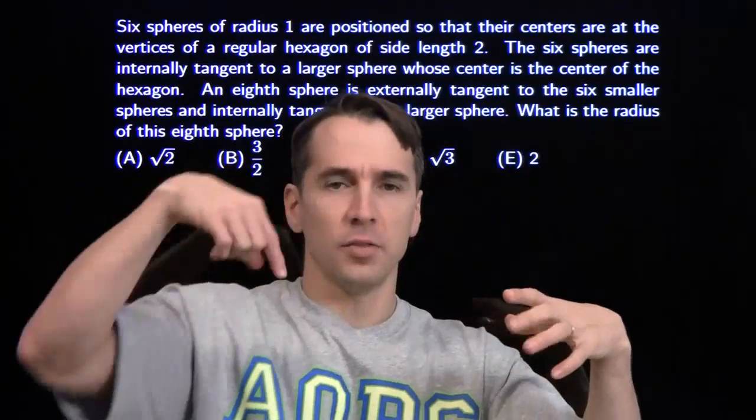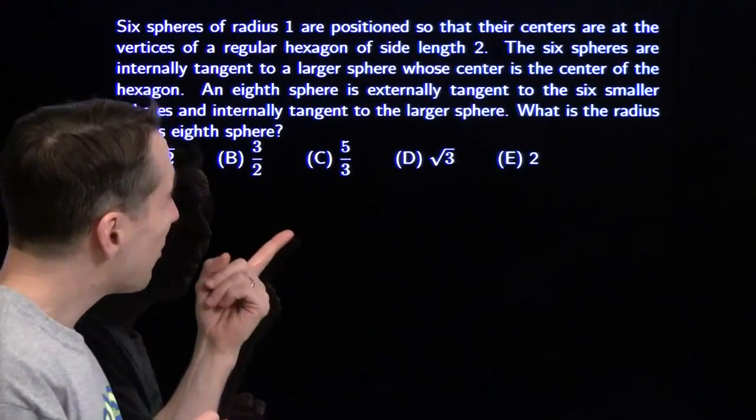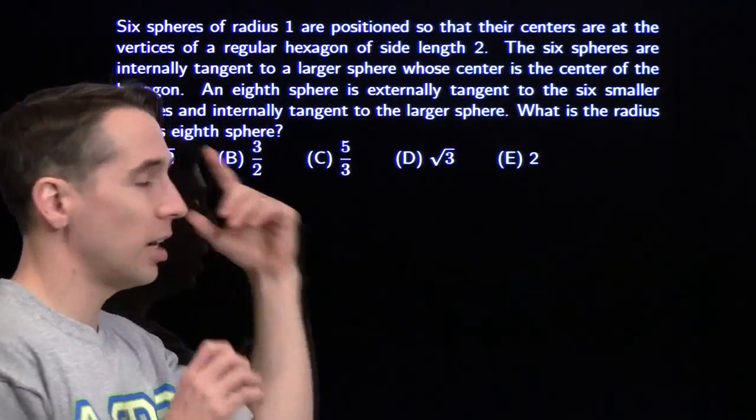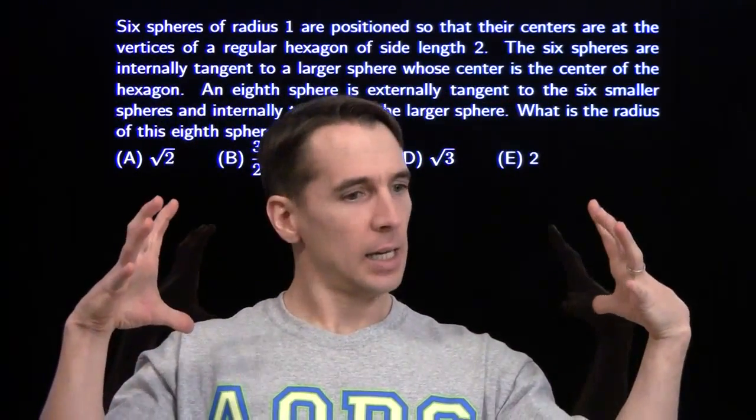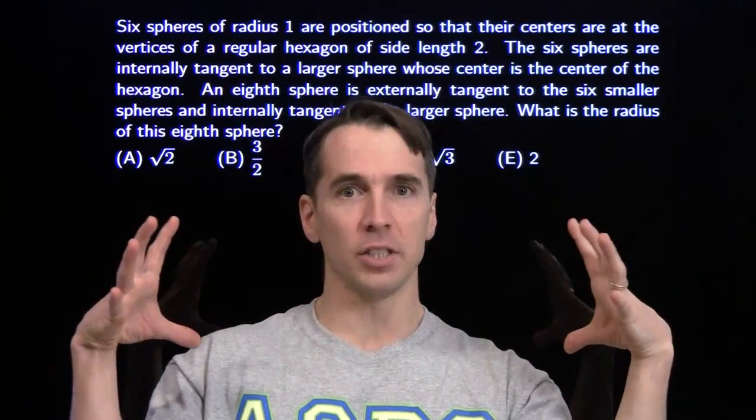So we start off with a hexagon, six spheres, each one tangent to each of its two neighbors. And then we're going to have a larger sphere centered at the center of the hexagon, such that it's tangent to each of the little spheres. Now, each of the little spheres will touch the inside of this giant sphere.